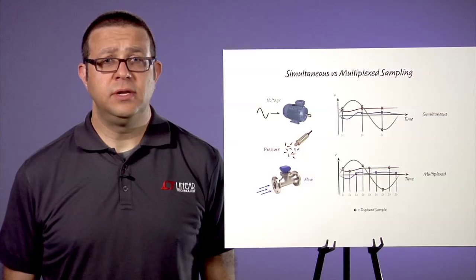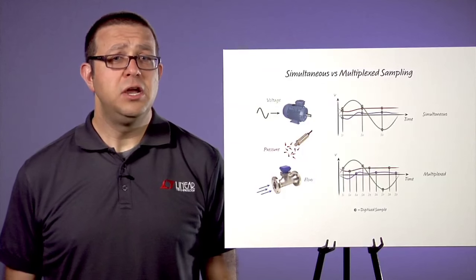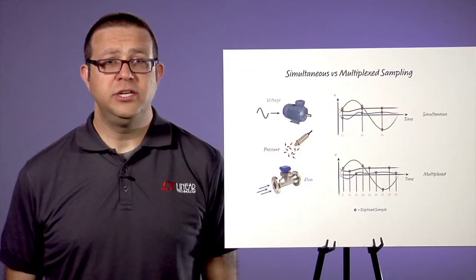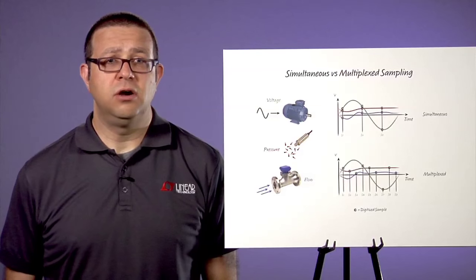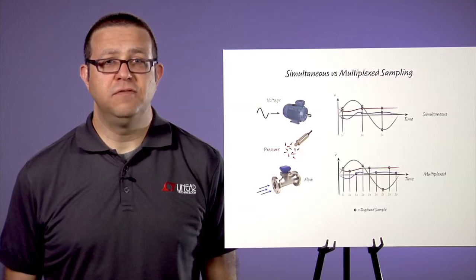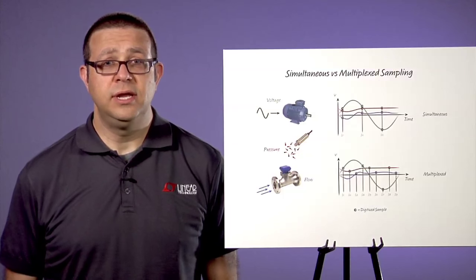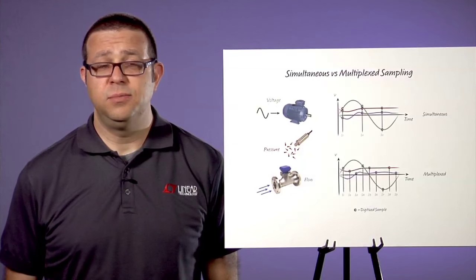As a result, simultaneous sampling converters are typically employed in applications where capturing time domain and correlation or frequency domain phase relationships across multiple signals is important. Multiplex sampling converters tend to be used in applications where tracking timing correlation across multiple signals is less important.